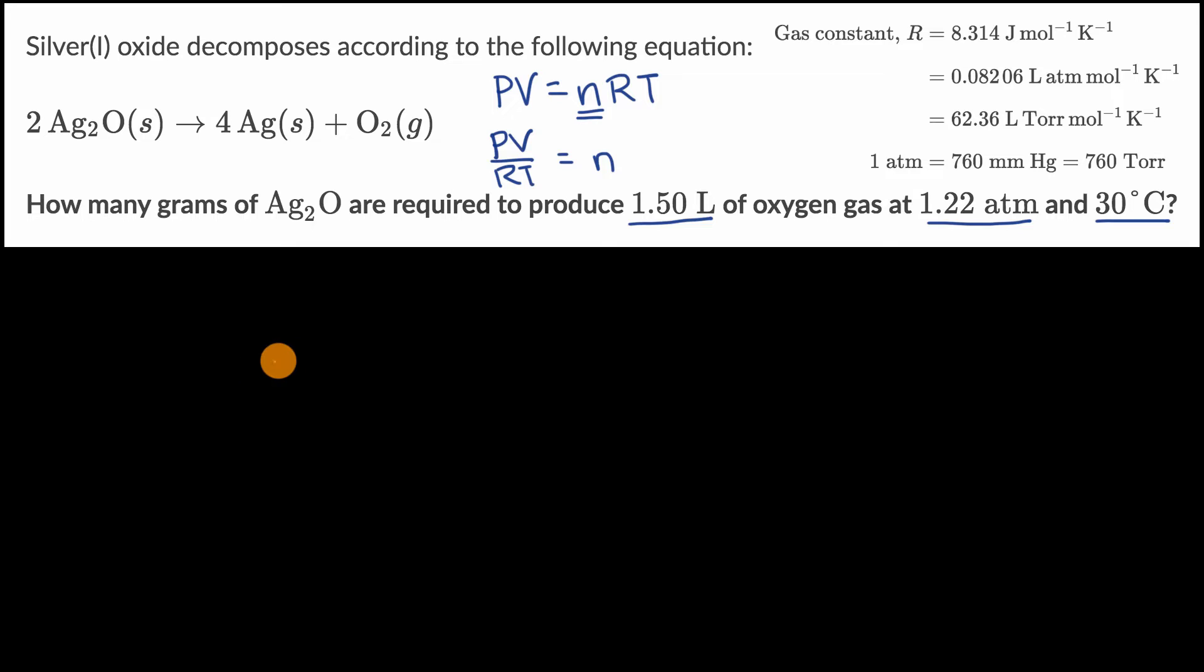The number of moles of oxygen is going to equal the pressure, 1.22 atmospheres, times the volume, 1.50 liters, divided by the ideal gas constant.